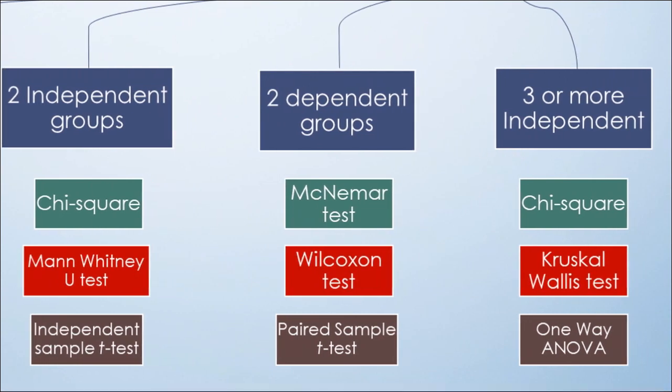With two dependent groups, we use McNemar test for categorical data, Wilcoxon test for non-parametric, and paired sample t-test for parametric data.